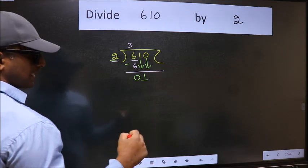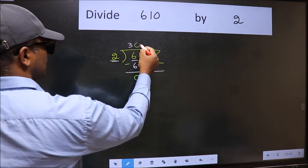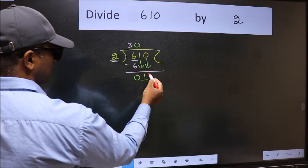And the rule to bring down second number is we should put 0 here. Then only we can bring this number down.